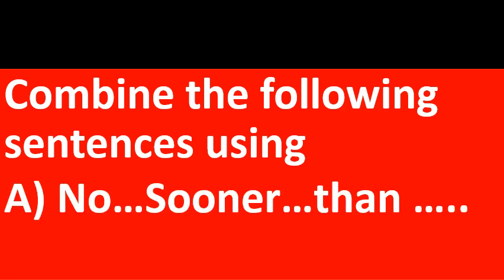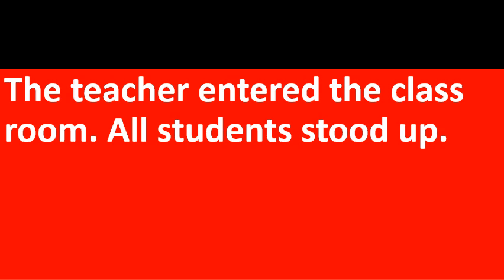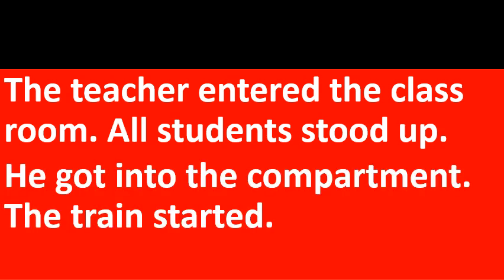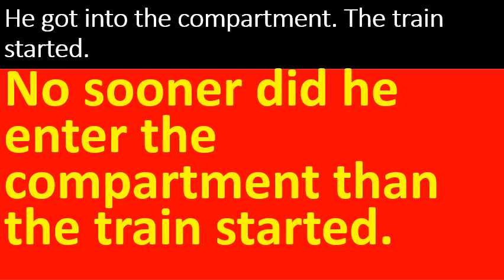Combine the following sentences using no sooner than and as soon as. First: The teacher entered the classroom — all students stood up. Second: He got into the compartment — the train started. No sooner did the teacher enter the classroom than all the students stood up. Here because 'entered' is past tense, you need to use 'did'. After 'did', the coming verb must be in the present form. That's why I have used 'enter'. No sooner did he enter the compartment than the train started.